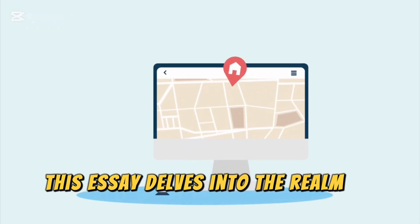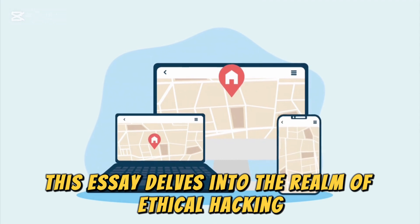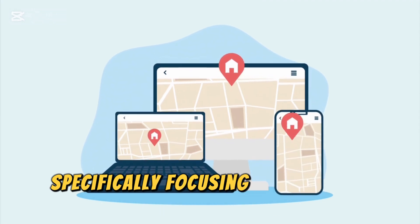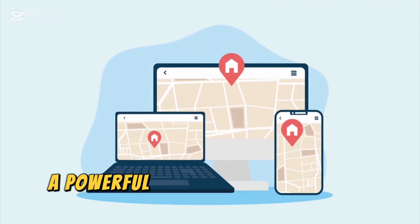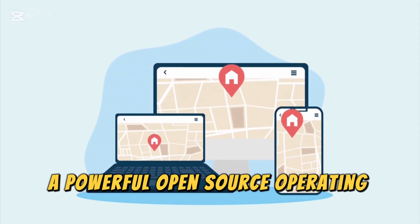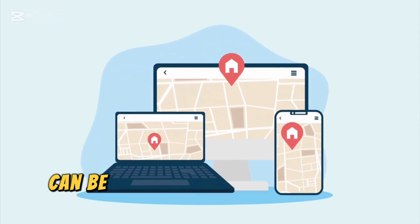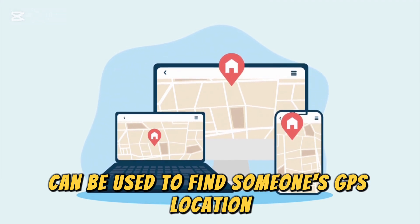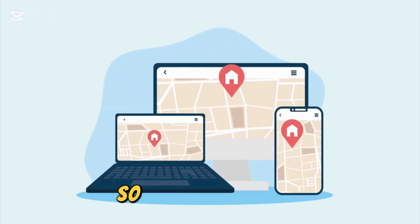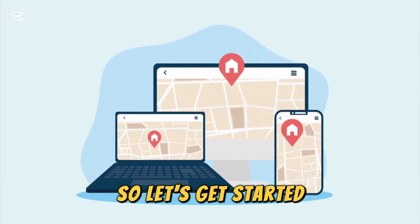This video delves into the realm of ethical hacking, specifically focusing on how Kali Linux — a powerful open-source operating system — can be used to find someone's GPS location. So let's get started.